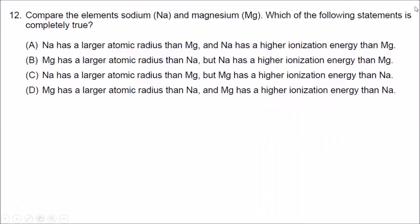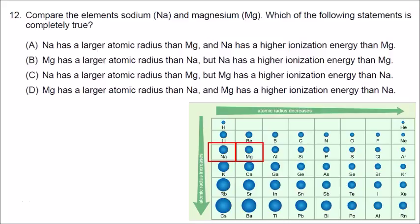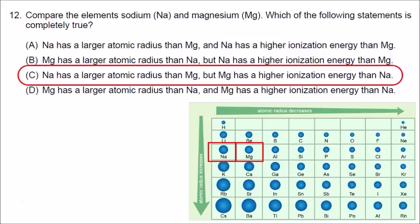Number twelve involves both atomic radius and ionization energy. There is an inverse relationship: the larger the atom, the smaller the ionization energy. Comparing sodium and magnesium: sodium has a larger atomic radius than magnesium, so the correct answer is either A or C. But magnesium should have a higher ionization energy, so the correct answer is C.